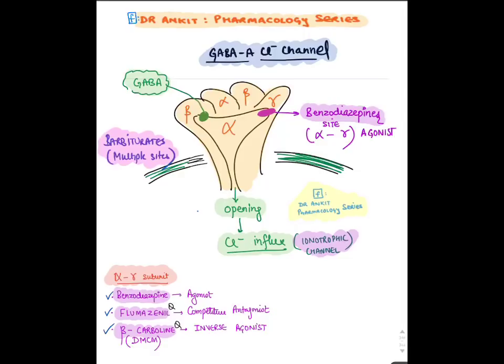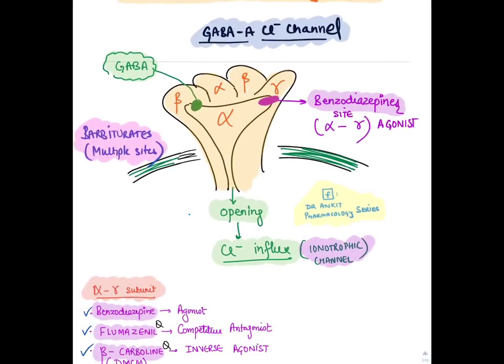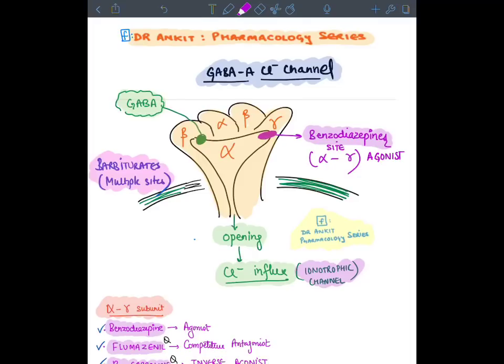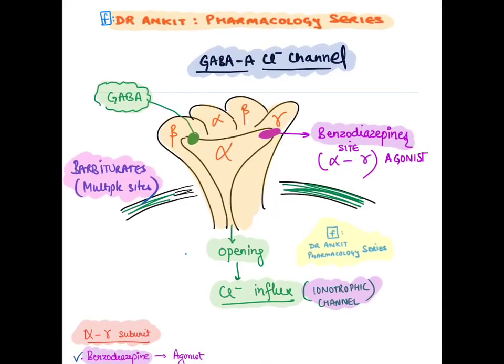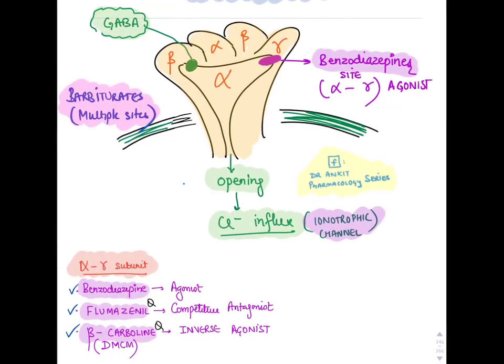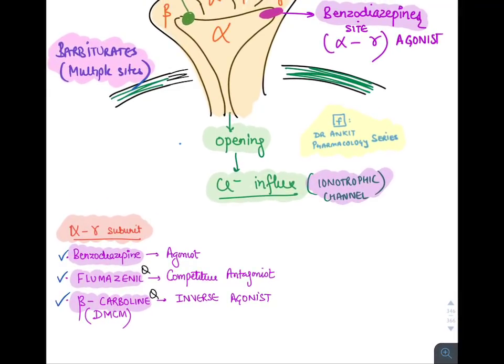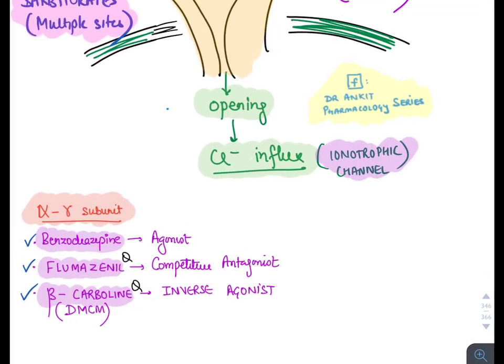The GABA-A chloride channel has five subunits — 2 alpha, 2 beta, and 1 gamma — giving it a pentameric rosette-like shape. Benzodiazepines act on the alpha-gamma subunit to open this channel. Benzodiazepines are agonists at the alpha-gamma subunit of the GABA-A chloride channel.